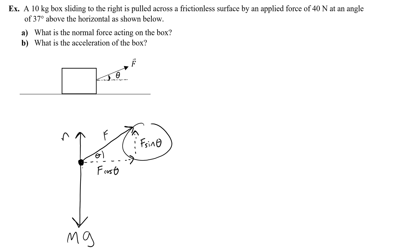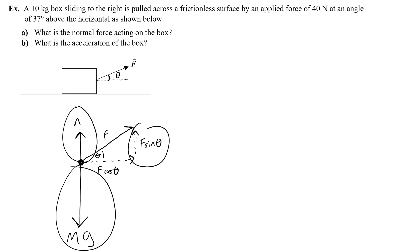Here is my free body diagram: weight, normal force, and the applied force turned into cosine and sine components. To find the normal force, I think about all vertical forces and whether they are balanced or unbalanced. The box is not accelerating vertically, so the upward forces are balanced by the downward forces. I can write: n plus F sine theta equals mg.